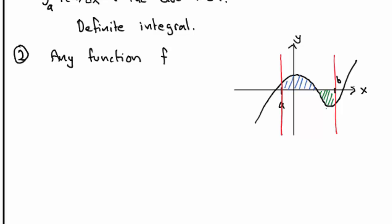Then the function goes negative, so I change the color to green. And we hit the vertical line at b. In this case, the integral from a to b, f of x dx,